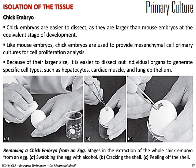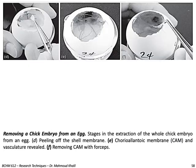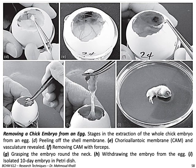To remove a chick embryo from an egg, you swab the egg with alcohol, then crack the egg and peel off the shell. After peeling the shell, the chorioallantoic membranes (CAM) and vasculature are revealed. You then remove the chorioallantoic membrane with forceps as shown in figure F. After that, you grasp the embryo around its neck, withdraw it from the egg, and isolate the 10-day embryo in a petri dish.